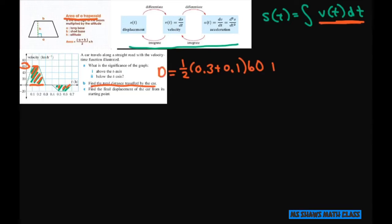And then we're going to add, because we want this total distance. Do the same for the second piece. So that's one-half, and if you do the b, this is 0.1 plus 0.3. And the height is 20.